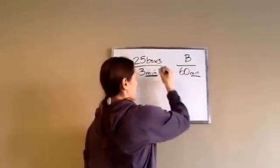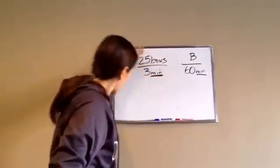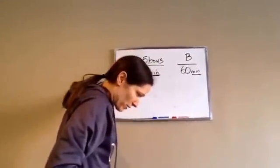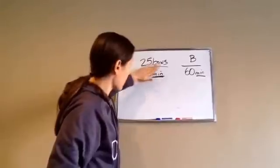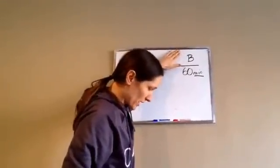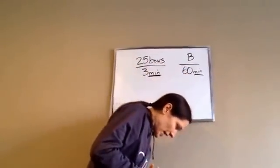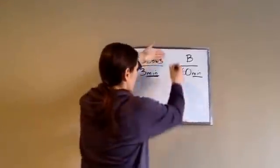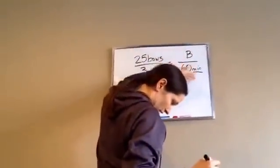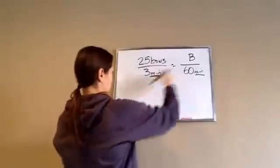So we have minutes, minutes, bows, bows. So if they're doing 25 bows in 3 minutes, at that same rate, how much can she do in 60 minutes? So that's exactly what you're going to do. You're going to put 25 over 3 equals B over 60. And let's figure out what that answer is.